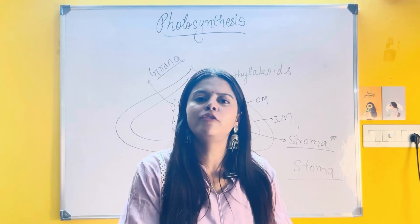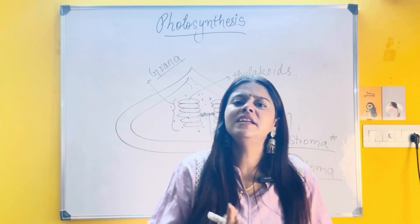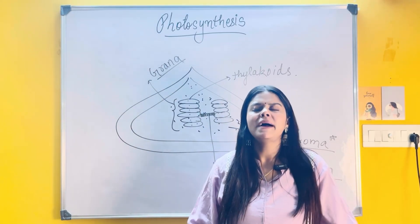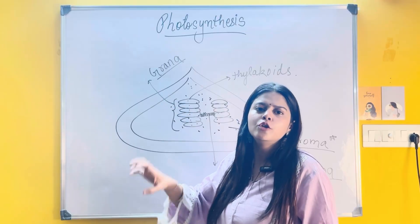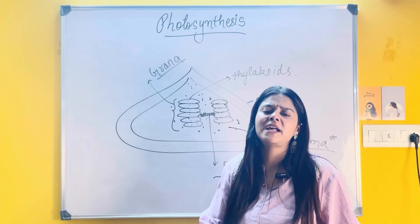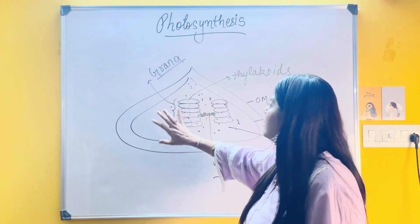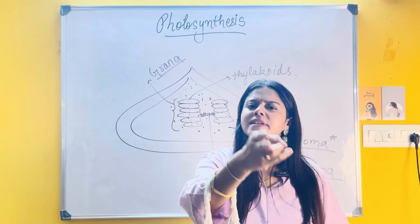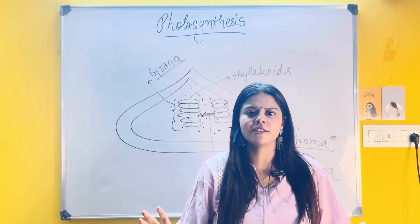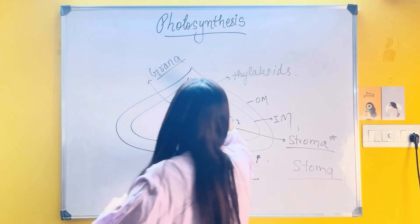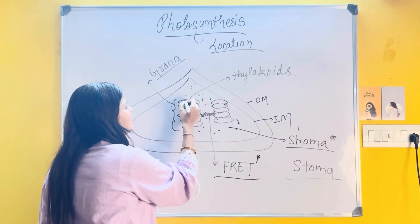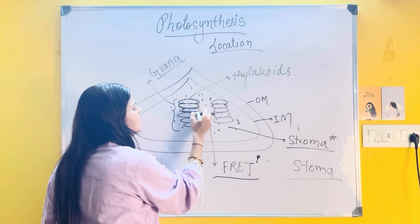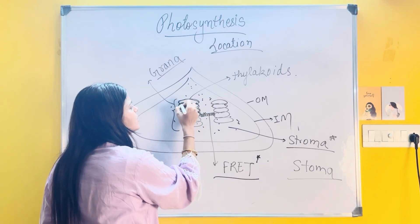All of you have heard of chlorophyll. Chlorophyll is a green pigment which traps sunlight for the process of photosynthesis. My question is: where exactly is chlorophyll present in the diagram of chloroplast? Chlorophyll is present in the walls of the thylakoid. These coin-like structures are called thylakoids, and chlorophyll is located in their walls.